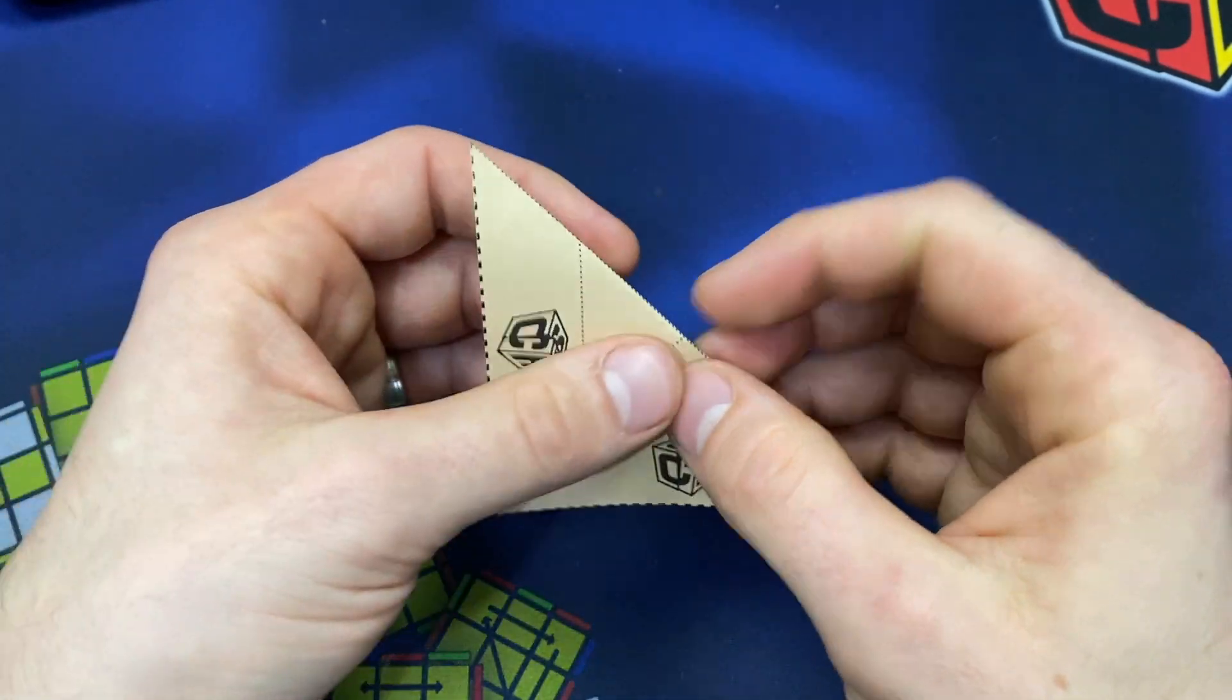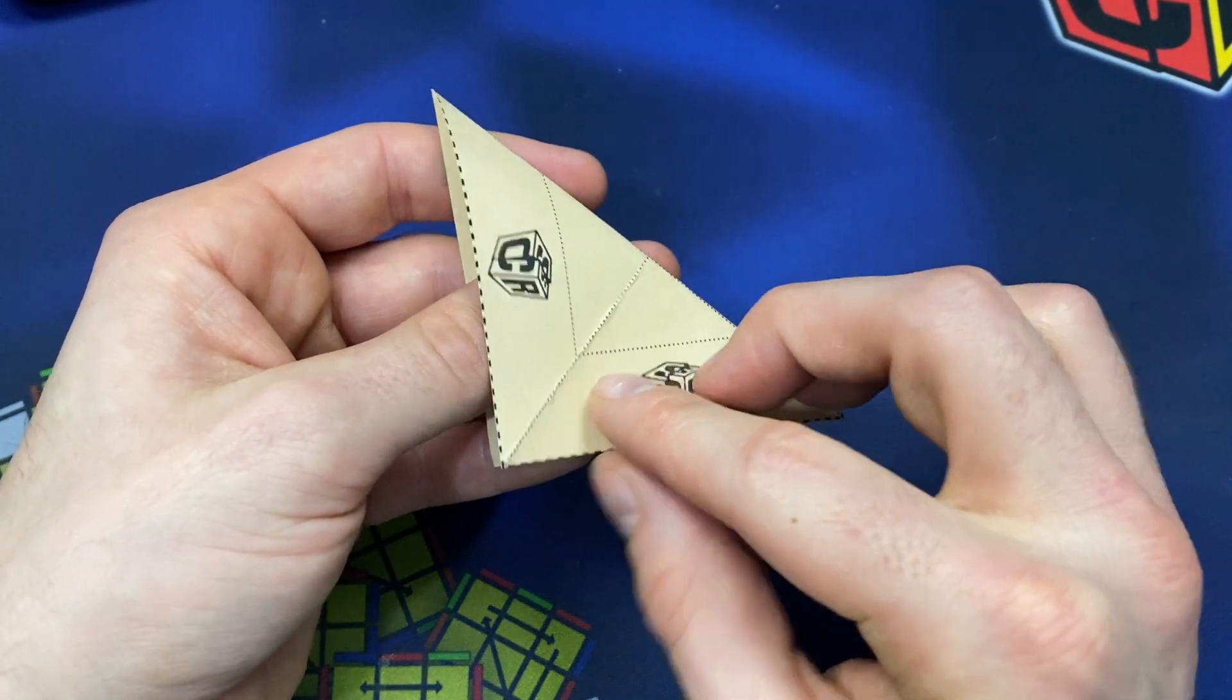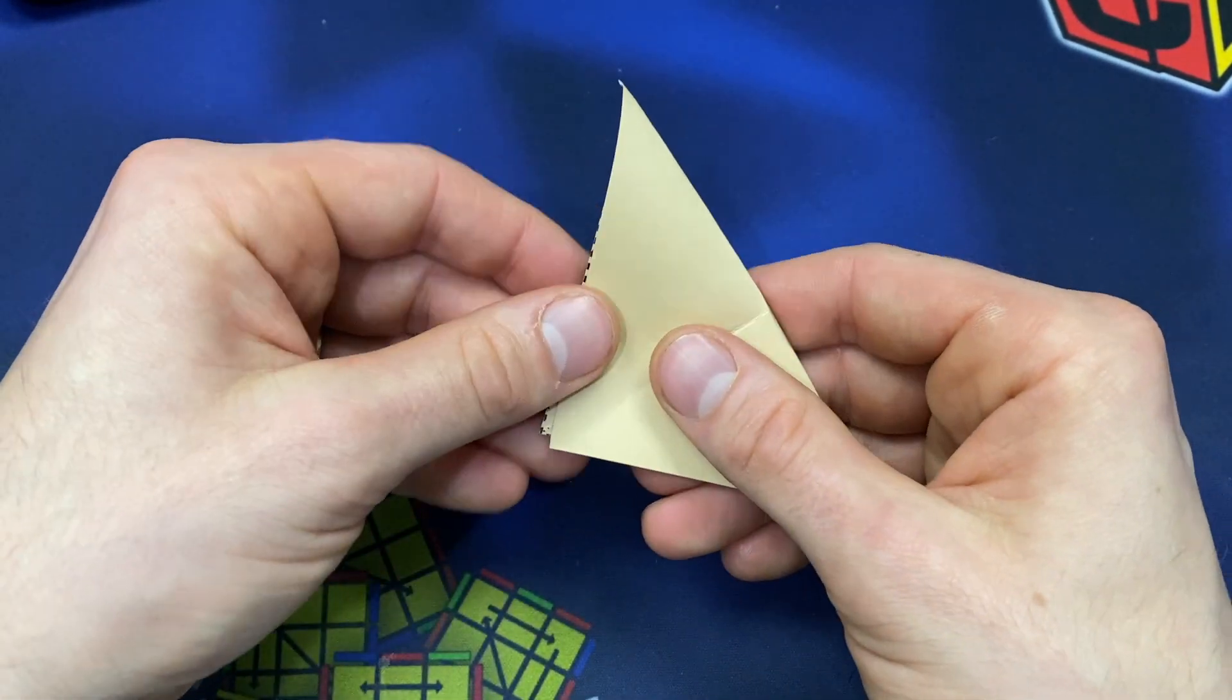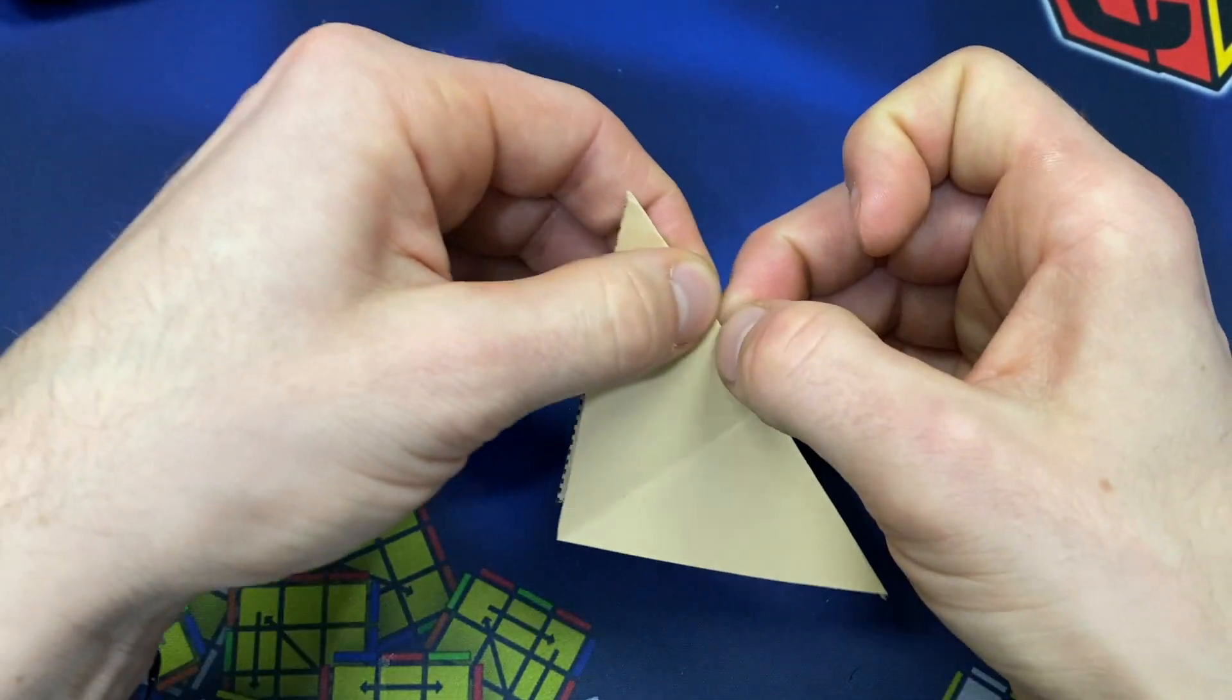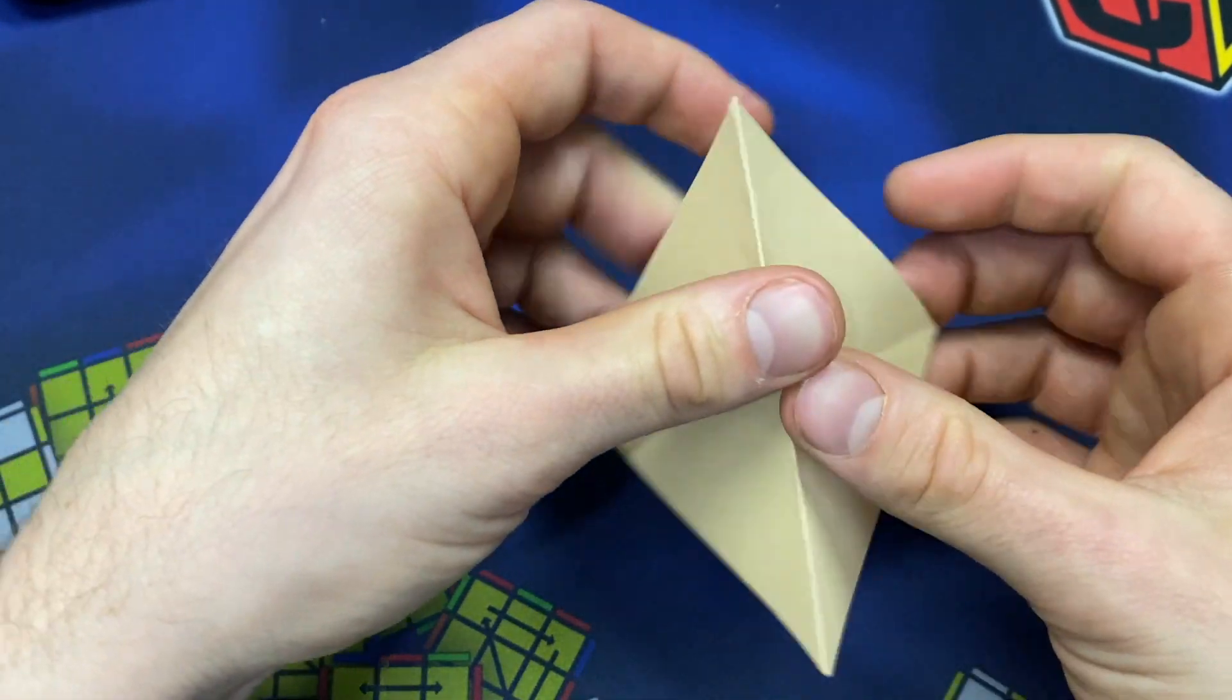And then this is a step that I like to do to make it easier for the last step. You're going to crease the inside just about there to there, so about half that length. Flip it over so the inside is showing. You're just going to crease a bit from the inside here and the other way.